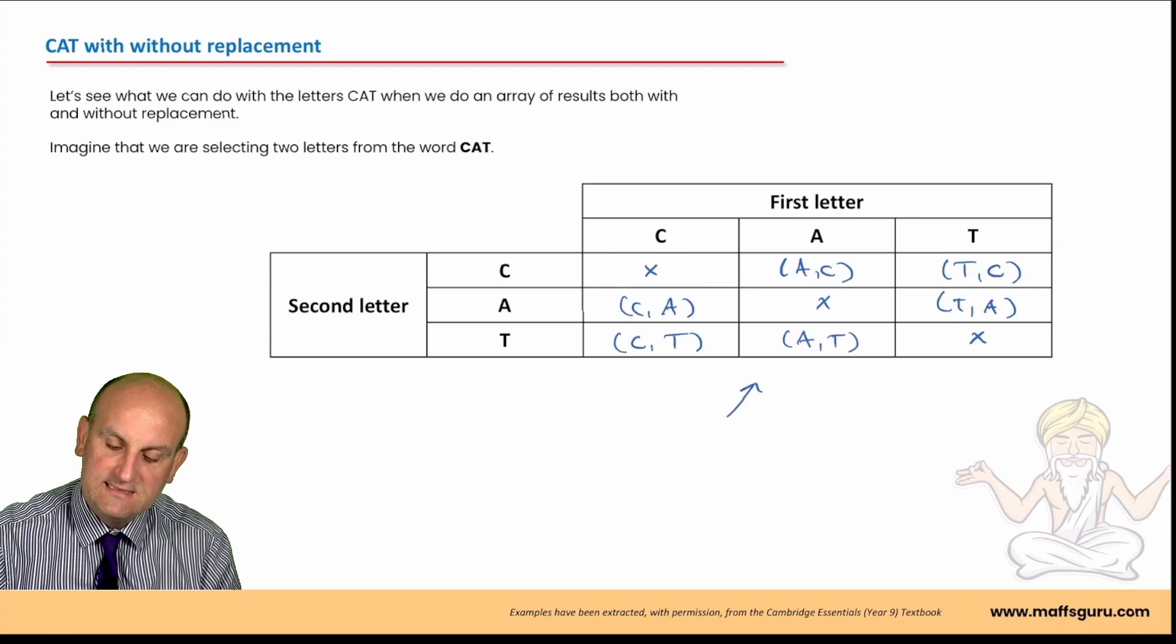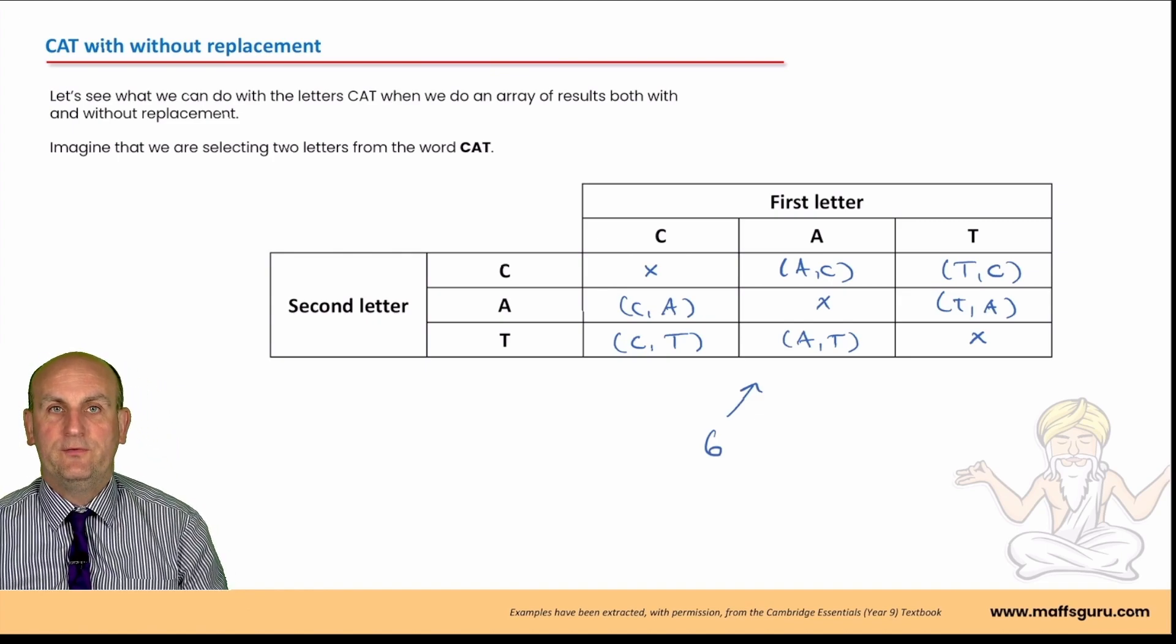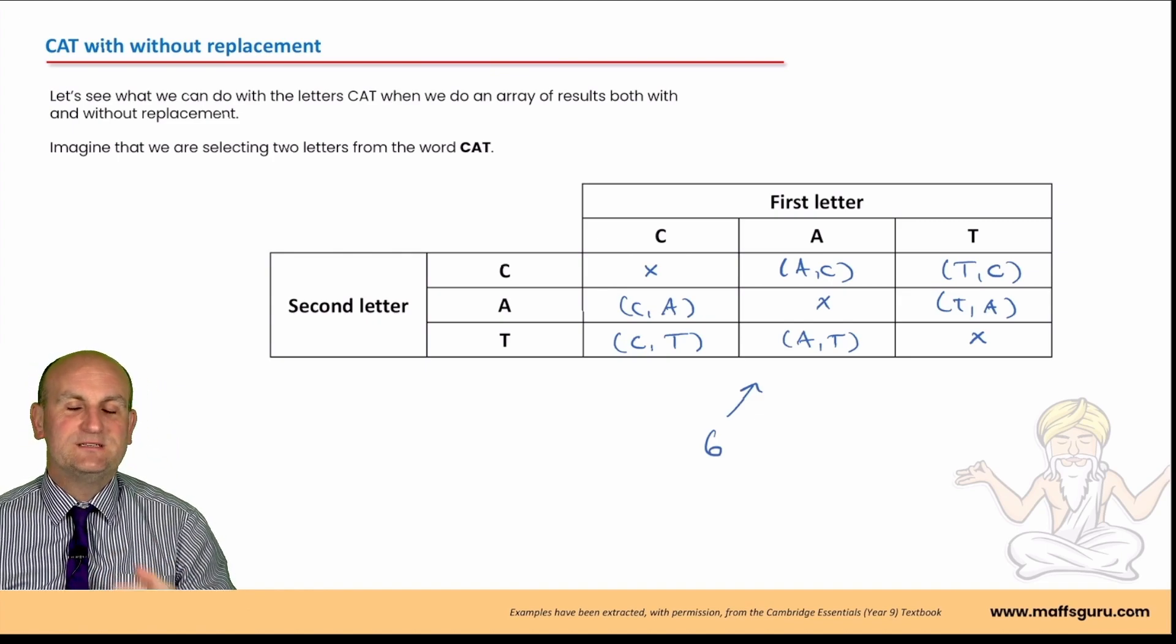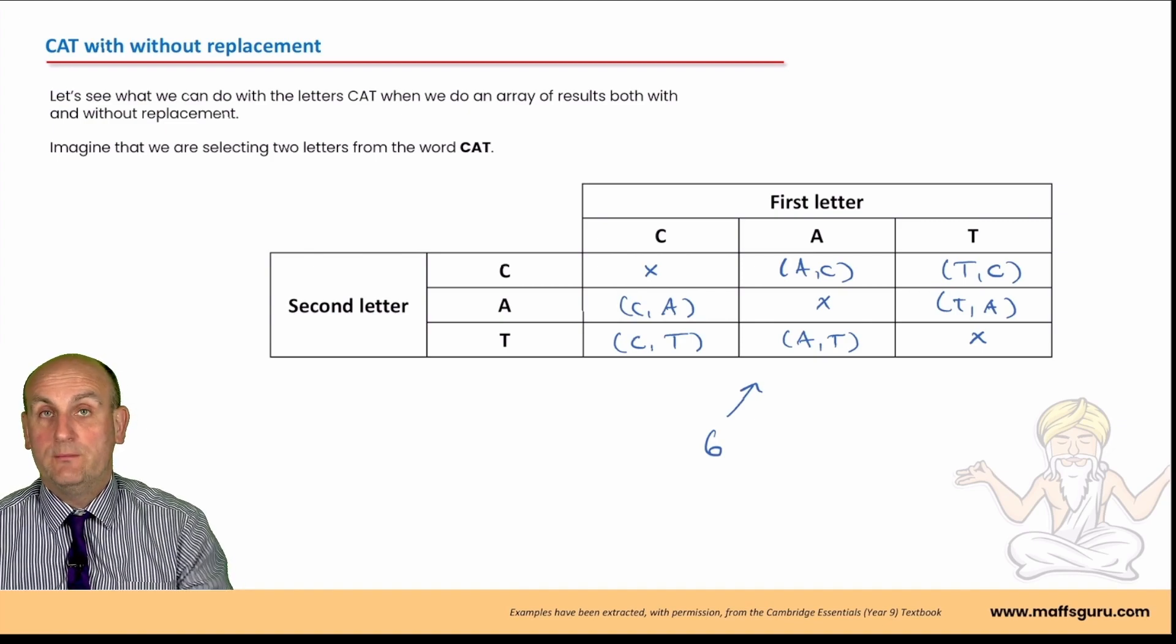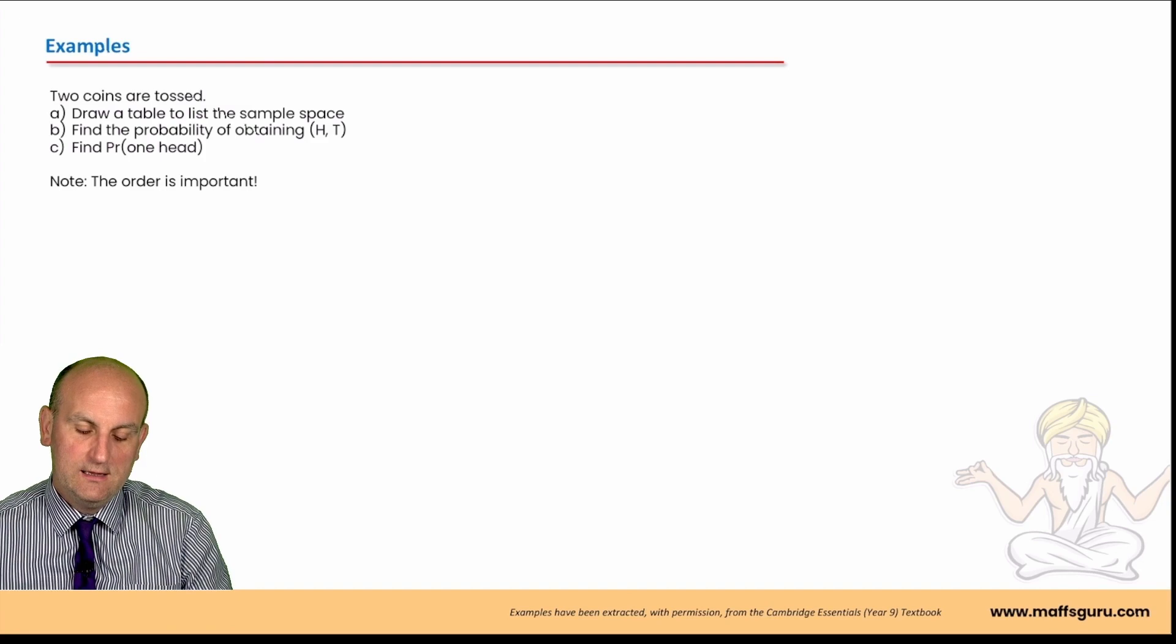Now, what we notice here is there's only one, two, three, four, six possible outcomes. So, the number of outcomes has changed because I've suddenly not put letters back in the bag. And again, these are the type of questions we can usually use in an exam.